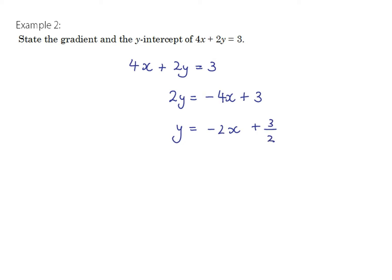Now that it's in gradient-intercept form, we can clearly see that the gradient is the coefficient of x, which is negative 2, and the y-intercept is positive three halves — so the y-intercept has coordinates (0, 3/2).